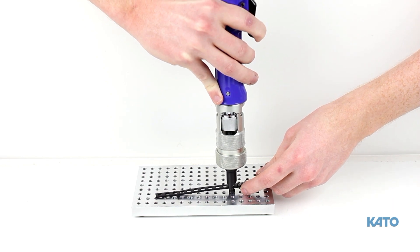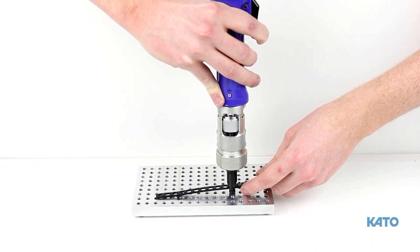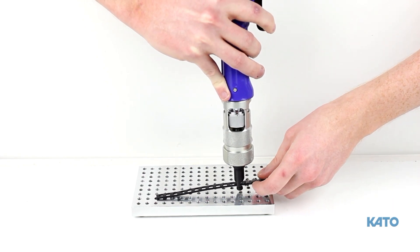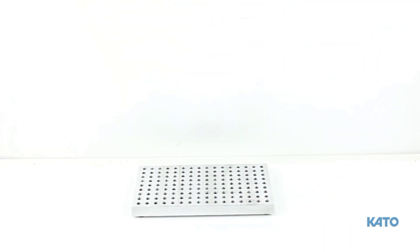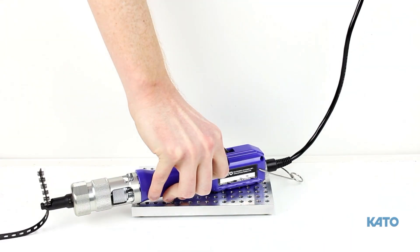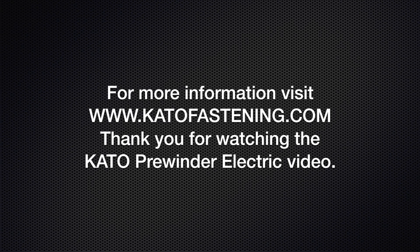The Kato prewinder electric tool is quiet, clean, easy to set up, and easy to use. It's the best option for strip feed coil thread inserts users, and it's only available from Kato. Thank you for watching the Kato prewinder electric tool video.